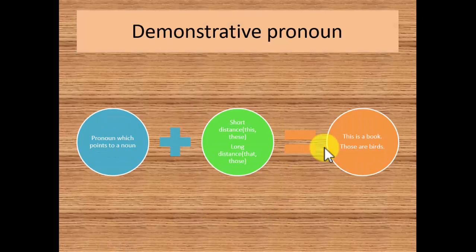Next is the demonstrative pronoun. Pronoun which points to a noun. Now distance is there, so I am pointing like this is a book. These are the birds because when they fly they are in the sky and we are human beings on the earth. So how do we point? They are flying in the sky, far from our reach, from our access. So for them we use the word those, the word these, that.